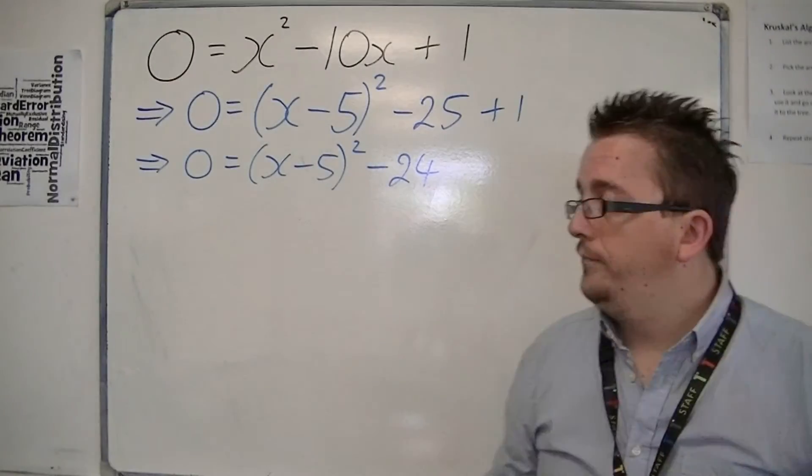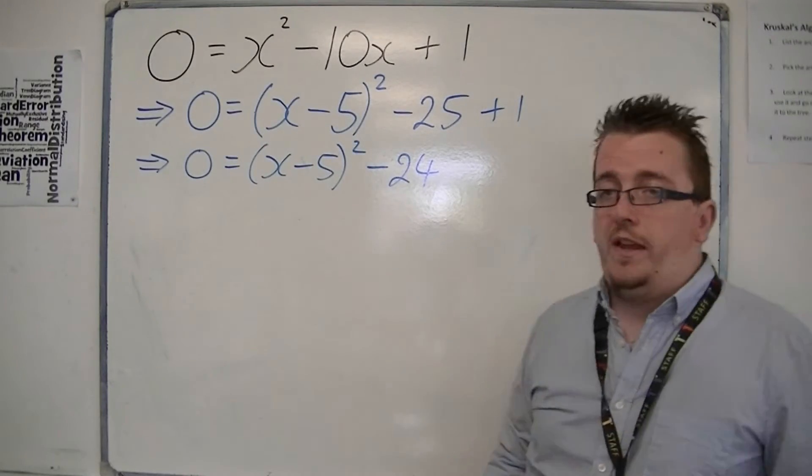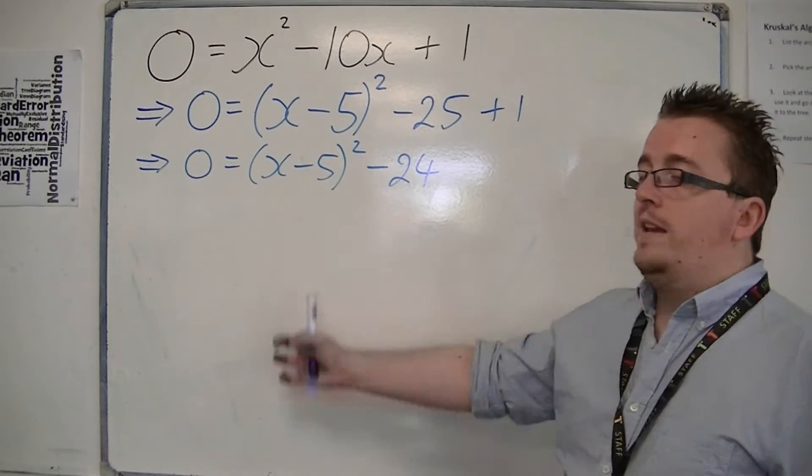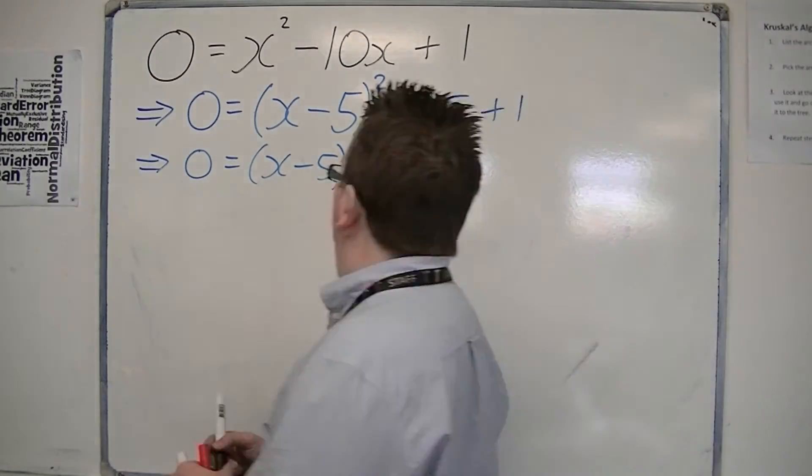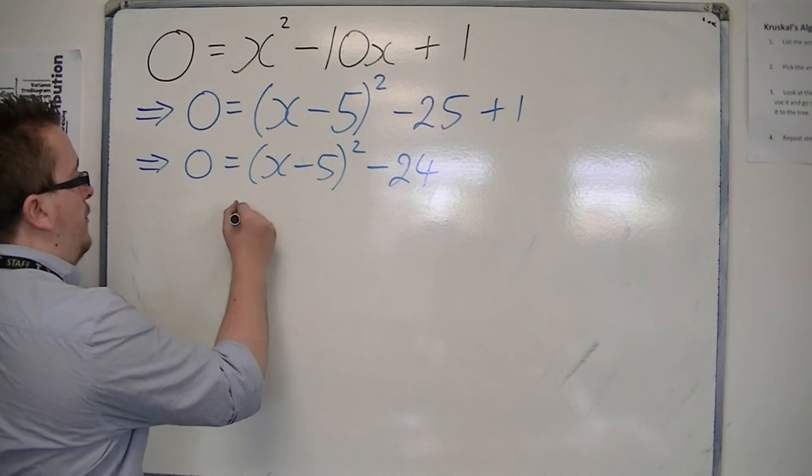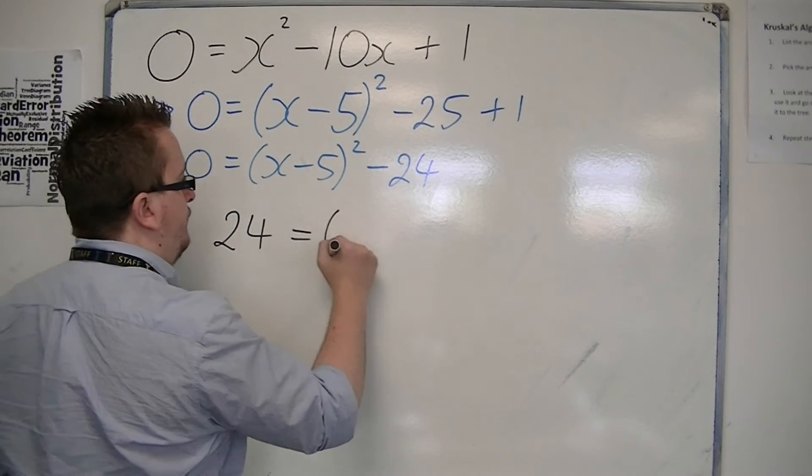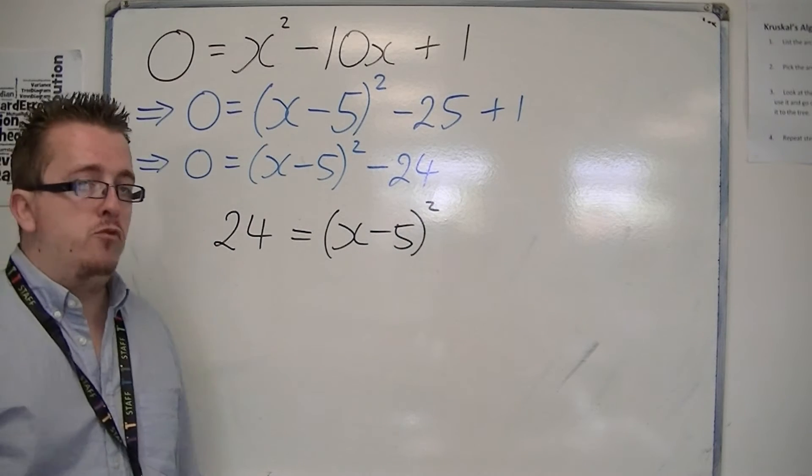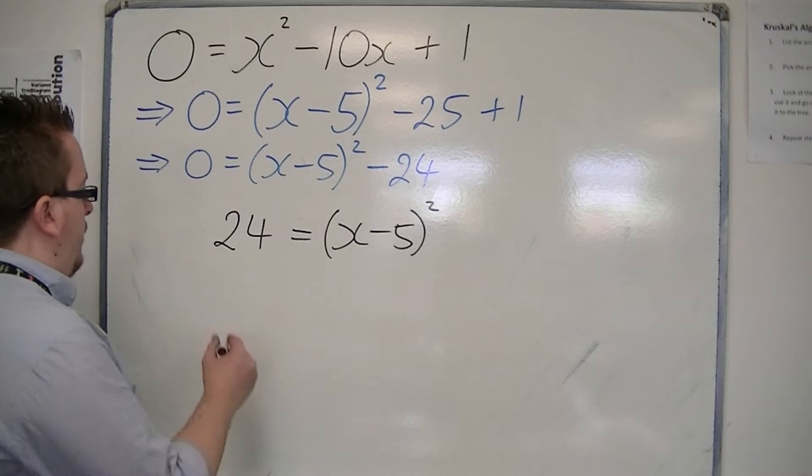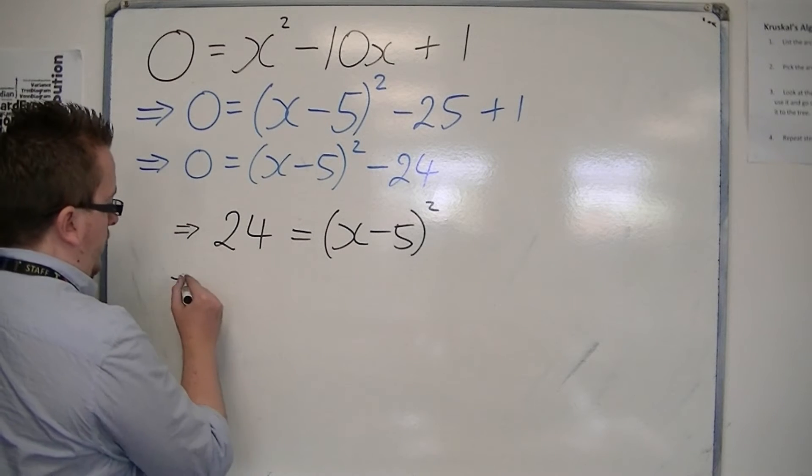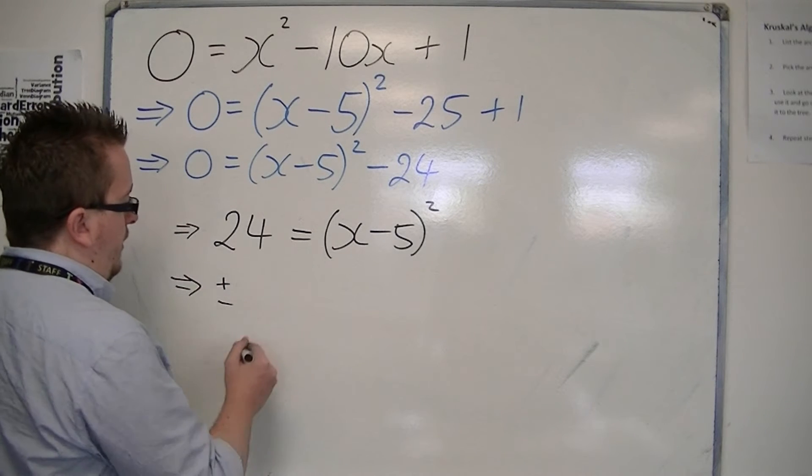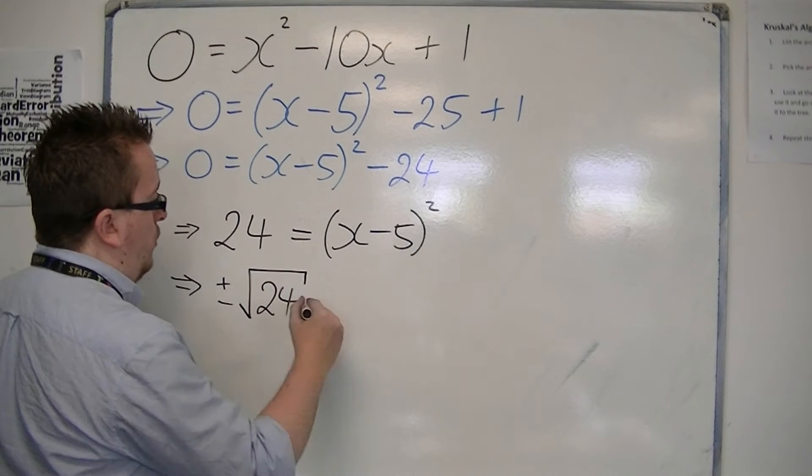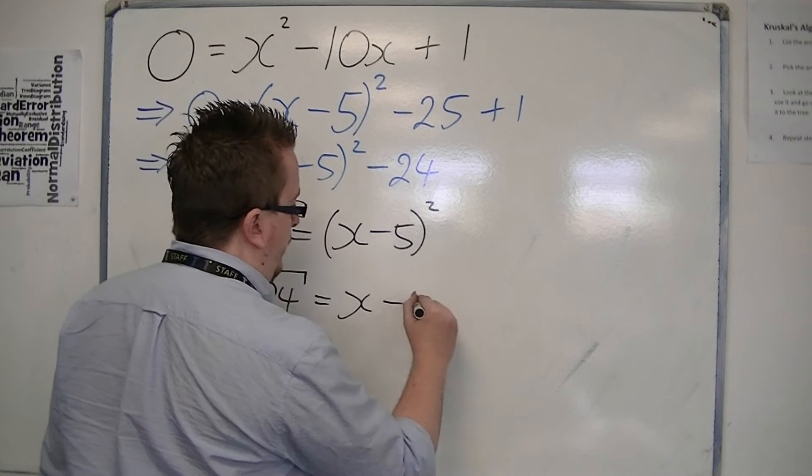So, that's the first step. Now, the next step is actually solving this equation by rearranging it to get x equals. So, I'm going to add 24 to both sides. And then I'm going to have to square root both sides. So, square root both sides, we're going to get plus or minus, and don't forget that plus or minus, the square root of 24 is equal to x minus 5.